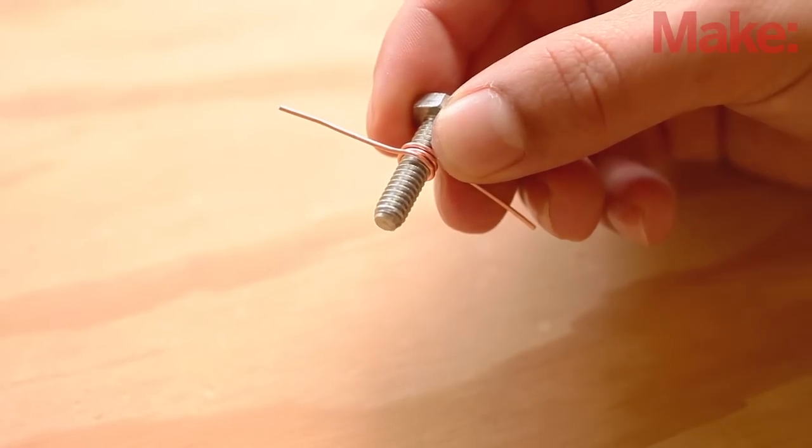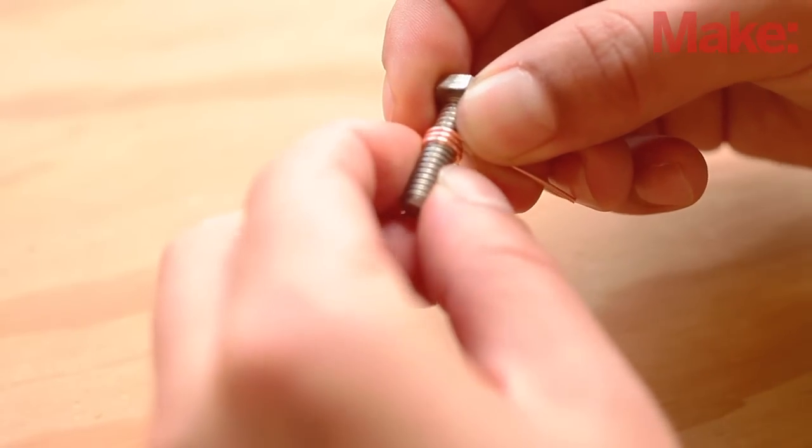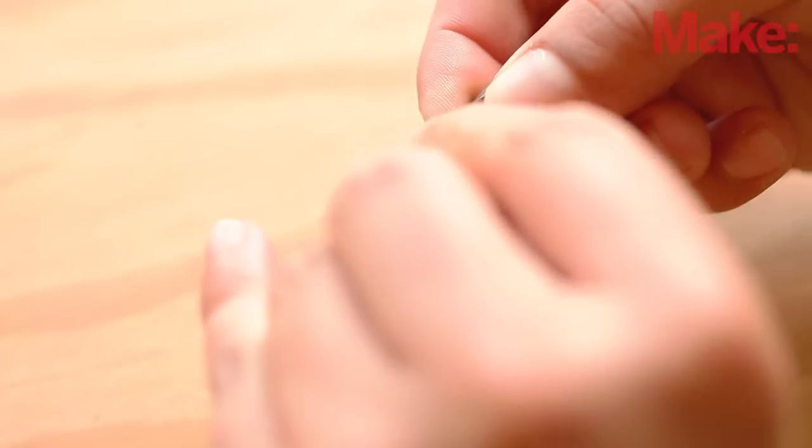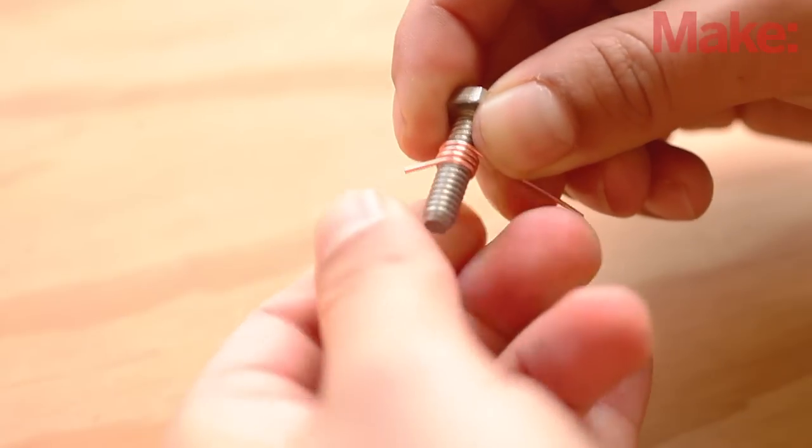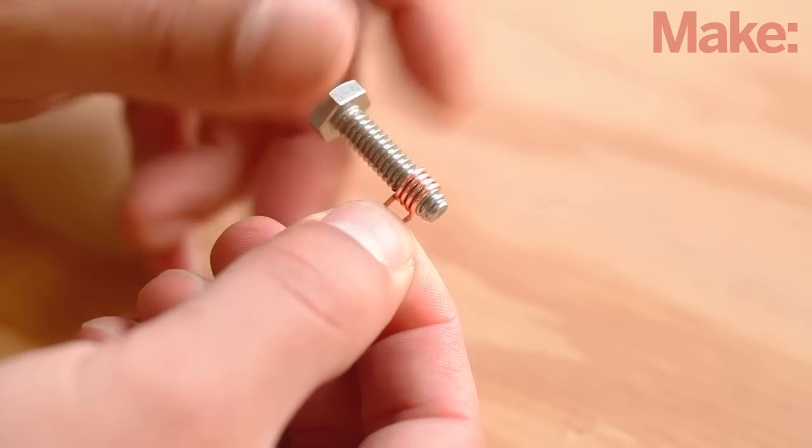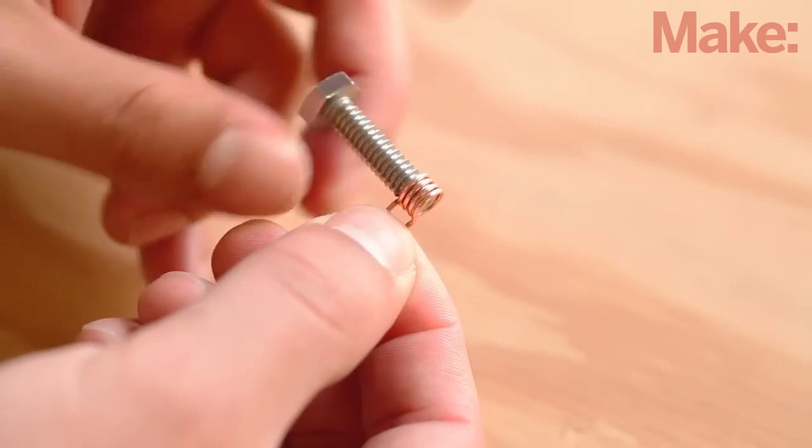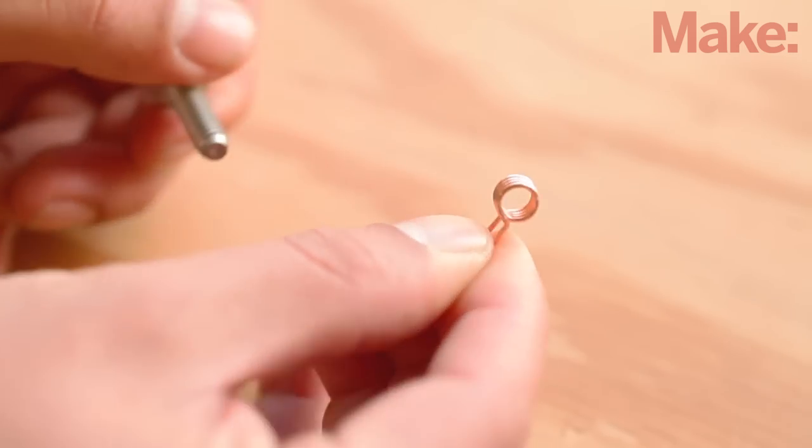Next, we'll form the coil. Strip about 10 centimeters of 18 gauge solid copper wire and wind four turns around the threads of a quarter-twenty bolt. Turn the coiled wire off the bolt as if you're unthreading a nut and clip each lead as shown.